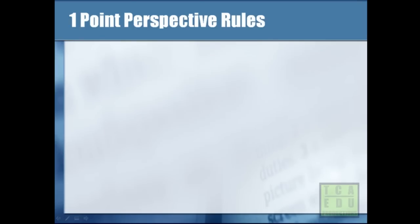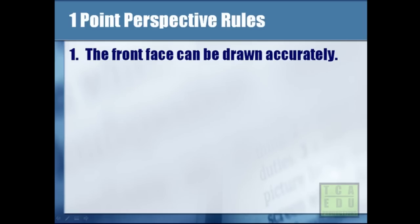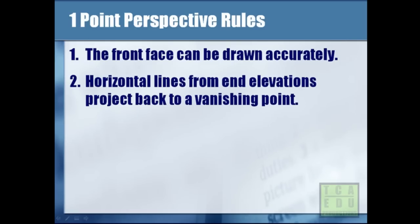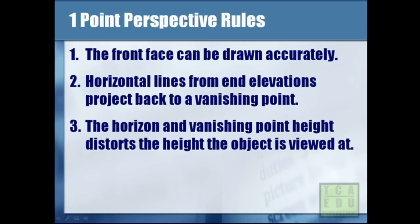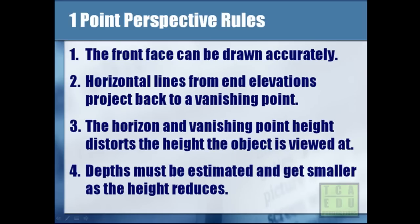Recapping on one point perspective rules reminds us that the front face can be drawn accurately, the horizontal lines from the end elevation project back to a vanishing point, the horizon and vanishing point height distorts the height that the object is being viewed at, and depth height must be estimated and should get smaller as the height reduces as we get closer to the vanishing point.